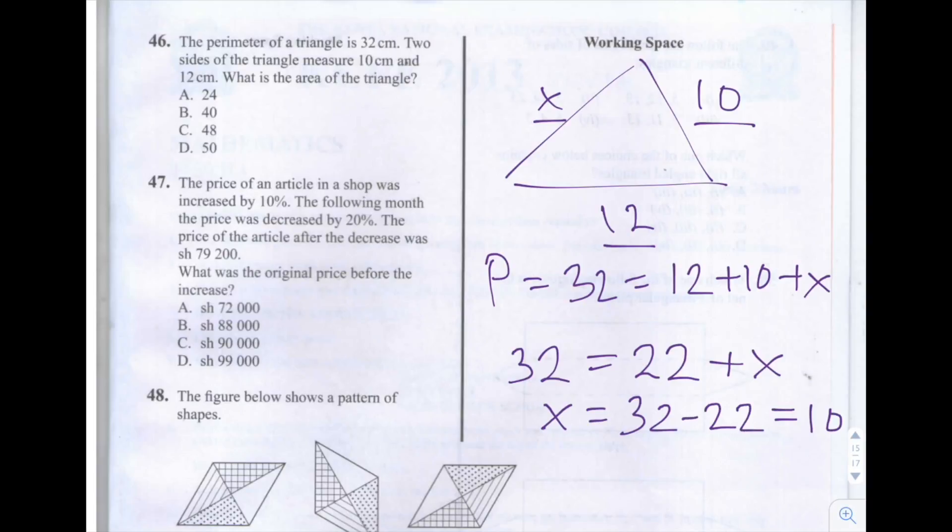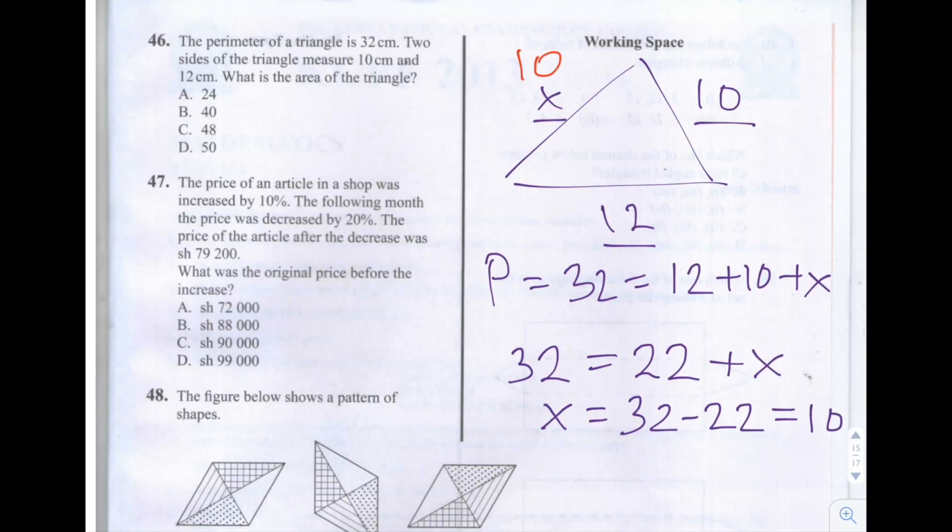So this side X has the value 10. So we can see that this triangle has two sides of equal length, and that makes it an isosceles triangle.